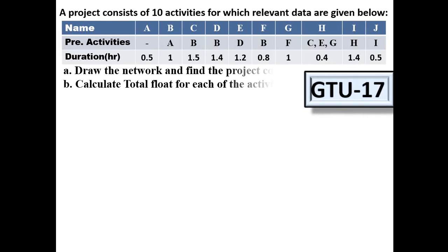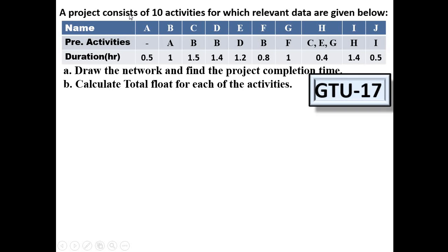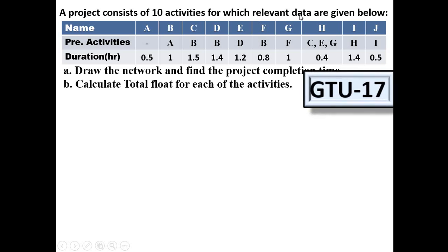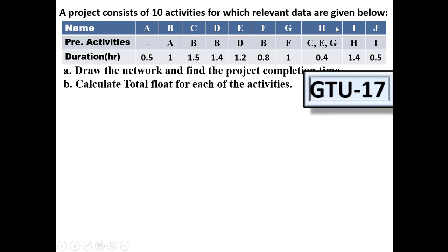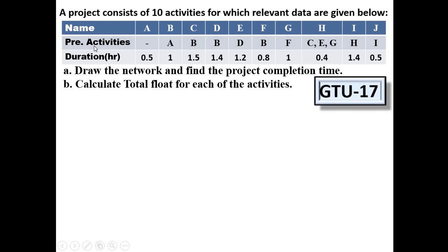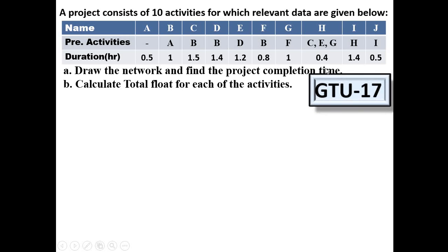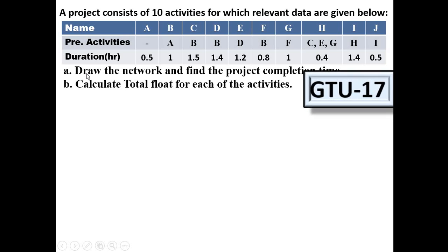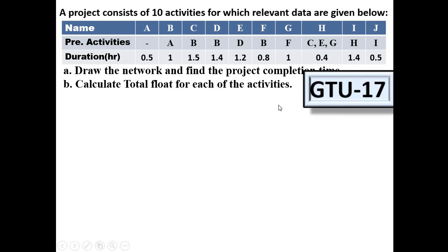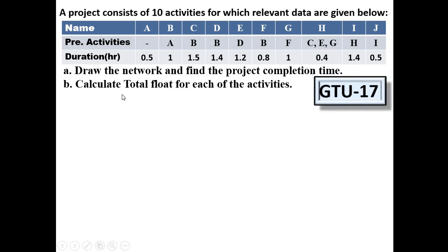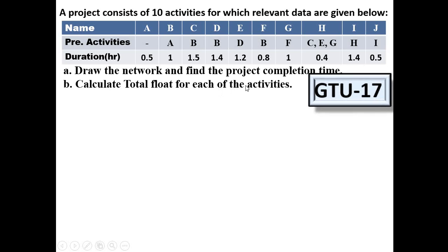This problem was asked in GTE 2017. A project consists of 10 activities for which relevant data are given. Here you can understand the different activities required to complete the whole project — the predecessor is given, and the duration in hours is also given. The task is to draw the network and find the project completion time, then calculate the total float for each of the activities.